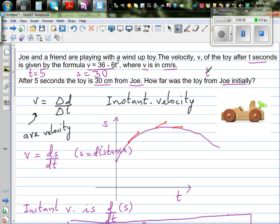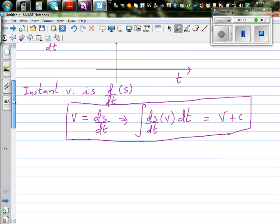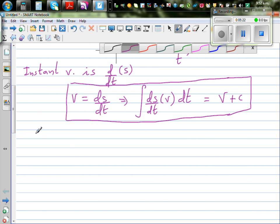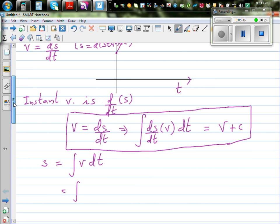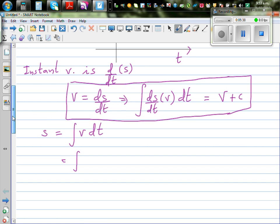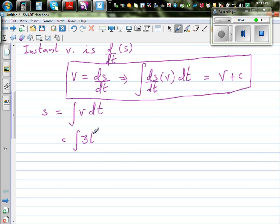That means S is given to be 30 when T is 5. How far was the toy from Joey initially? That means the question is, when T is 0, what is S? So as you saw, when you integrate the velocity function, you get your distance. So I can write S. The S would be integration of V DT. The S is integration of V DT. So this is integration of your V. Your velocity is 36 minus 6T squared DT.